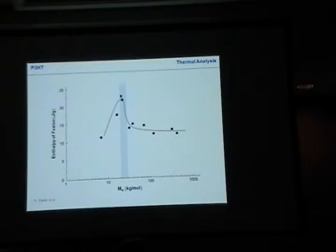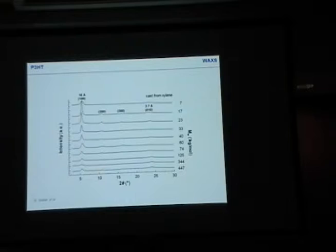Here you just have a compromise — they're just long enough that end groups don't really hinder them anymore, but just short enough not to entangle too much. So this graph is typical for any polymer in the world. This peak indicates where you have the highest degree of crystallinity — meaning there you have maybe two or three entanglements per chain.